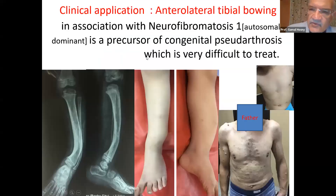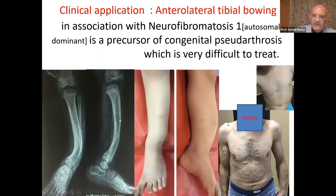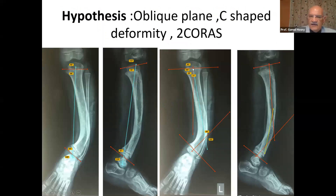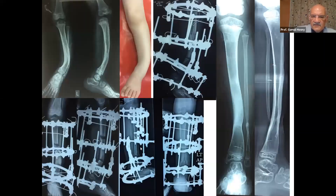Another clinical example: if you have anterolateral tibial bowing, you can treat it as an oblique plane deformity because you can see it in both the AP and lateral. We are cautious about the site of the bowing because of the risk of development of congenital pseudarthrosis of the tibia. We treat it as a deformity — proximal axis and distal axis are going to meet outside the bone, so we draw a third line, giving us two CORAs: a proximal CORA and a distal CORA. We did two osteotomies, correcting the deformity and performing lengthening.